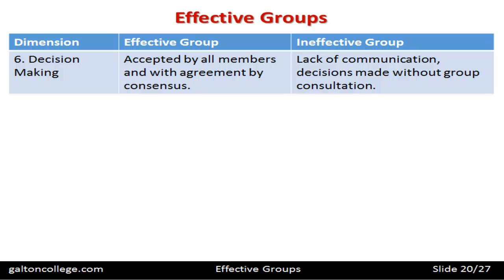For decision making, an effective group has decisions accepted by all members, with agreement by consensus — they all submit to whatever decision was made. With the ineffective group, there's a lack of communication, and decisions may even be made without the group being consulted.